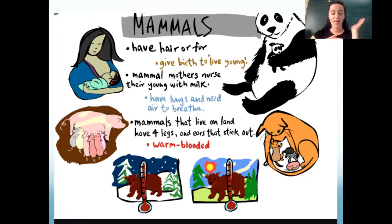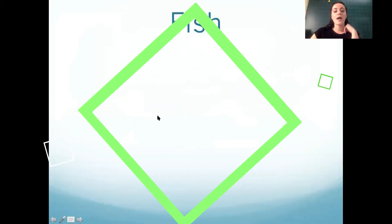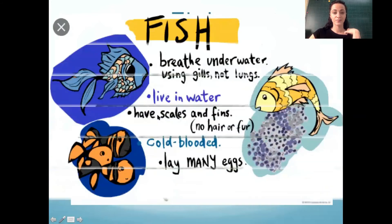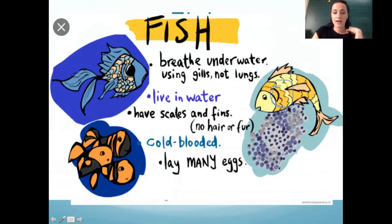Dolphins and whales come up to the surface to breathe because they have lungs instead of gills. A new one we learned today is about fish. Fish breathe underwater using gills — the gills are on the side of their head.